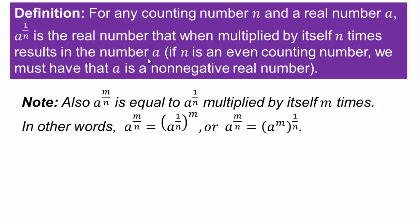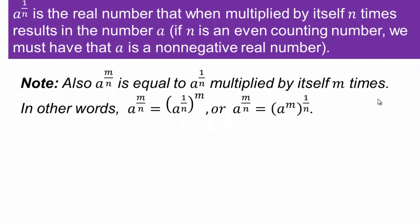Now note: if you have A to the power M over N — numerator M, denominator N — that is A to the power 1 over N, multiplied by itself M times. You can also think of it as A to the power M, raised to the power 1 over N. Either interpretation is fine.